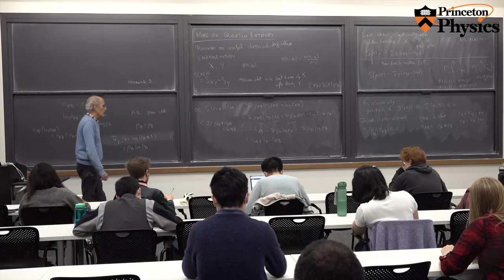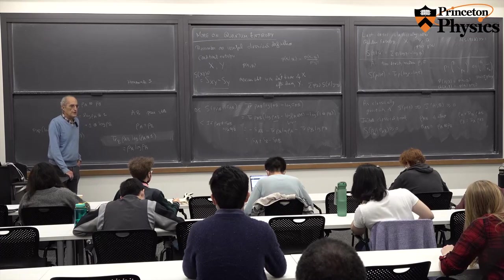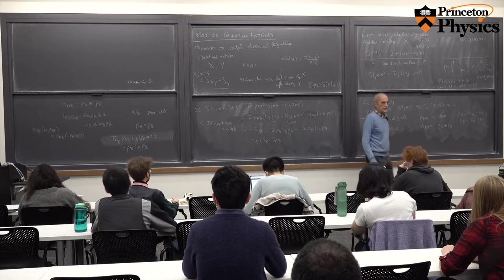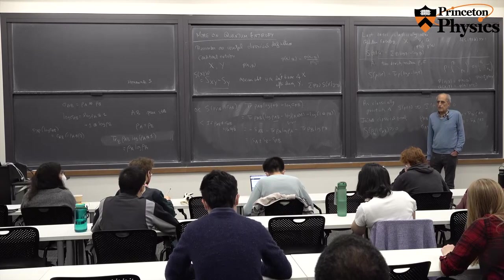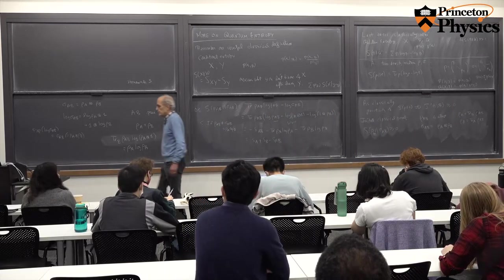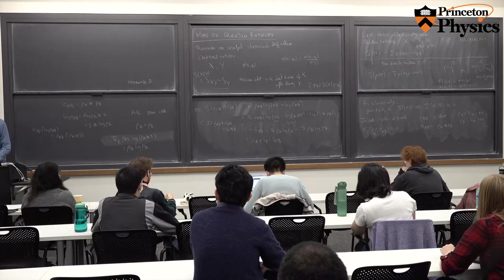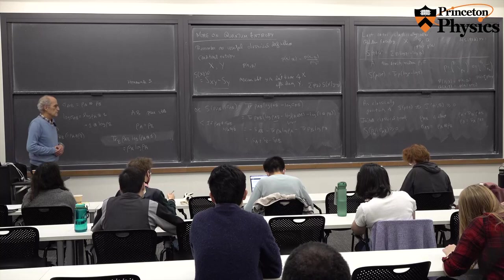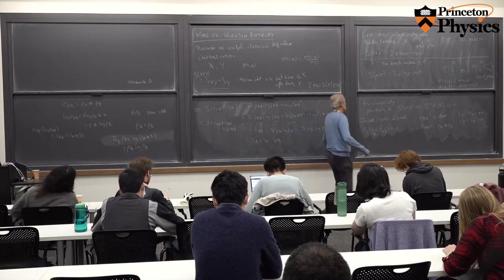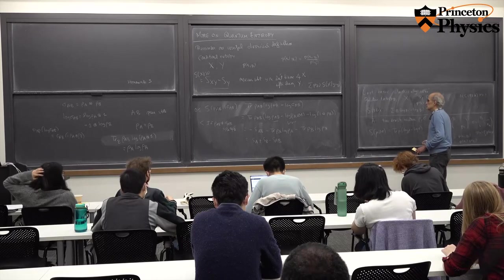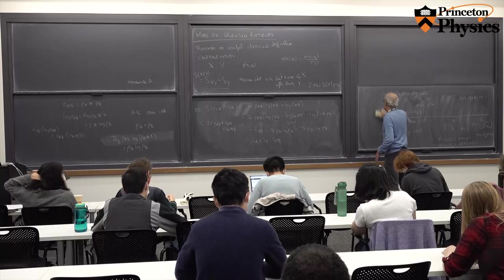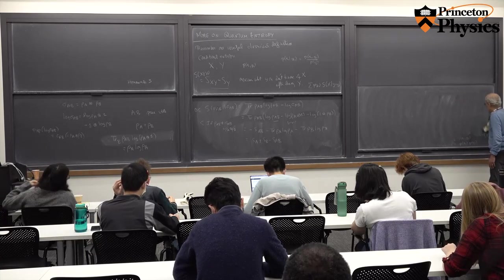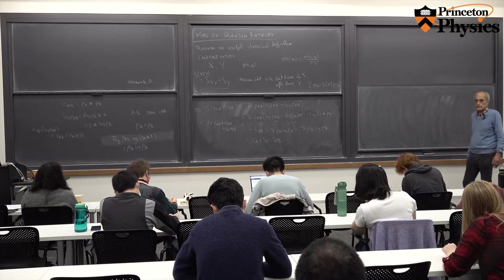We've proved that the mutual information is non-negative and vanishes only if the density matrix is a tensor product of density matrices of the two subsystems. That's a close analog of the classical fact. Mutual information behaves more classically than conditional entropy.